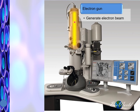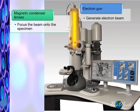That is why the column must remain a vacuum. This is to ensure that the electrons do not collide with the gas molecules and become diverted. To ensure that the electron beam travels directly to the specimen, this column will contain magnetic condenser lenses to help focus the beam.